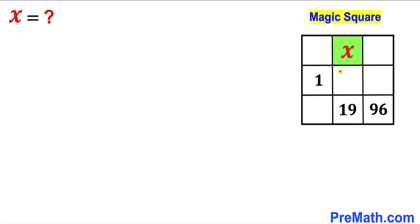Welcome to pre-math. In this video we have a 3 by 3 magic square with 3 rows and 3 columns. The value of this cell is 1, the value of this cell is 19, and the value of this cell is 96. Our task is to calculate the value of x.